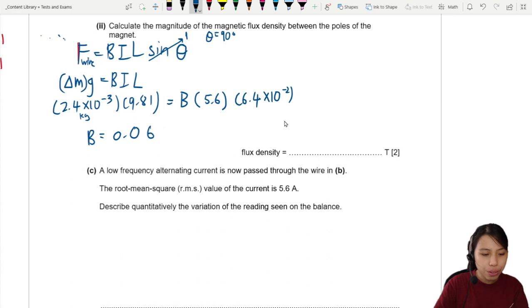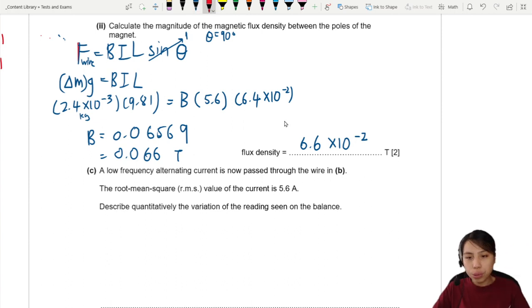Of 0.06569. Which you can also write as, well, let's round it off first. 0.066 Tesla. Or, some of you may prefer to write in standard form. 6.6 times 10 to the negative 2. Both also can. No standard form also can. Got standard form is also okay.